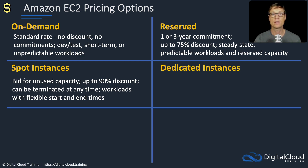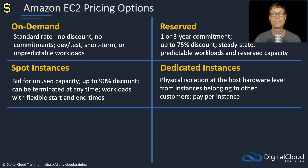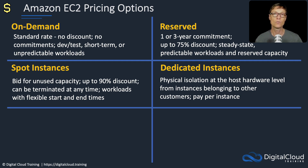We then have dedicated instances. This is where you have physical isolation at the host hardware level from instances belonging to other AWS customers. AWS typically uses shared infrastructure across many customers. If you need to dedicate your instances to hosts not shared with other customers, this is the option for you. You pay per instance, and dedicated instances can share hardware with other instances from your own account, but not from other AWS customers.